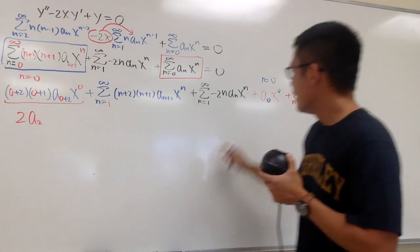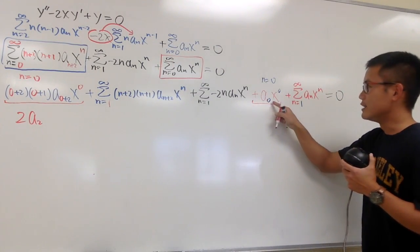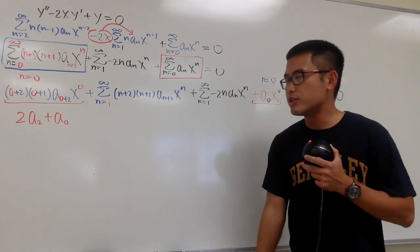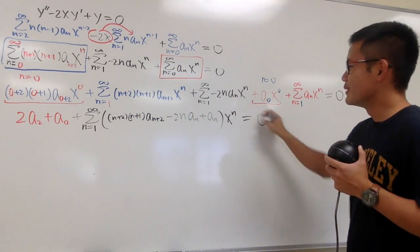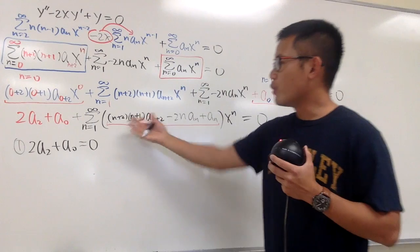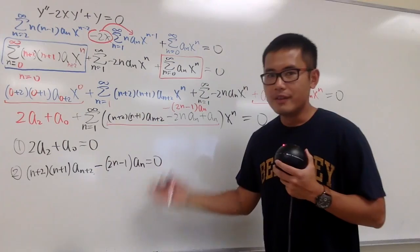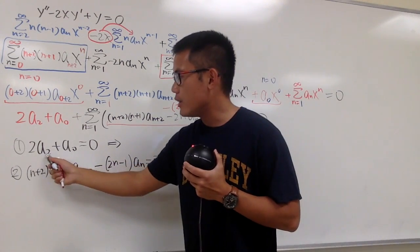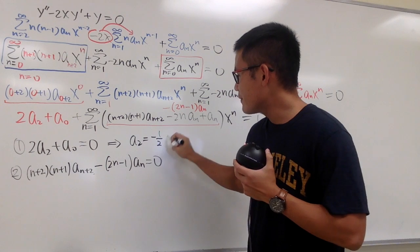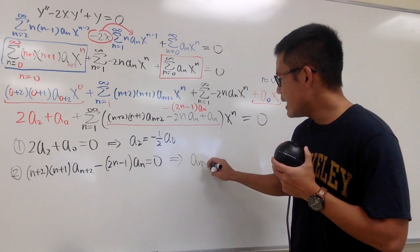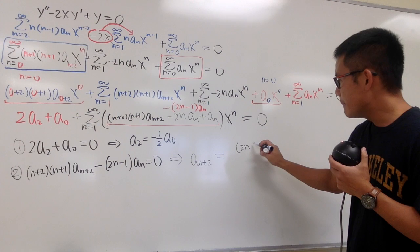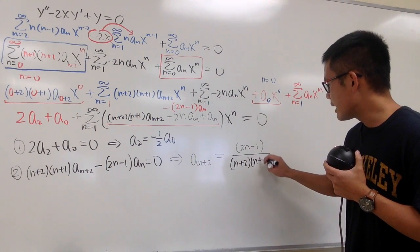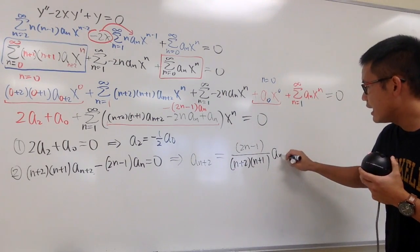This is just 2a2. And then for this, it's just plus a0 plus a0. So now we can just put them into just one sigma notation. And all this is still equal to 0. This plus that must be equal to 0. All this right here have to be equal to 0. These are the two conditions that we have. I am going to solve for the a with a bigger index, namely a2, is equal to negative 1 half a0. An plus 2 equal 2n minus 1. So divide it by n plus 2 times n plus 1. And now let's put down the an on the side.